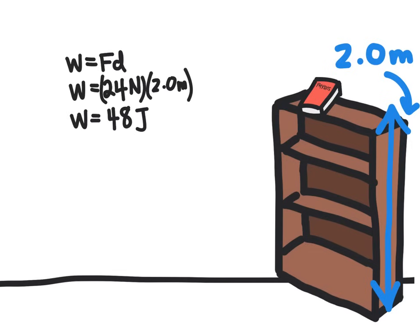We were able to calculate that using our work equation here, which is work equals force times distance. And so we take the force, if it took 24 newtons to lift this book, and we raise it up by 2 meters, when we multiply those together, we end up with 48 joules of work.